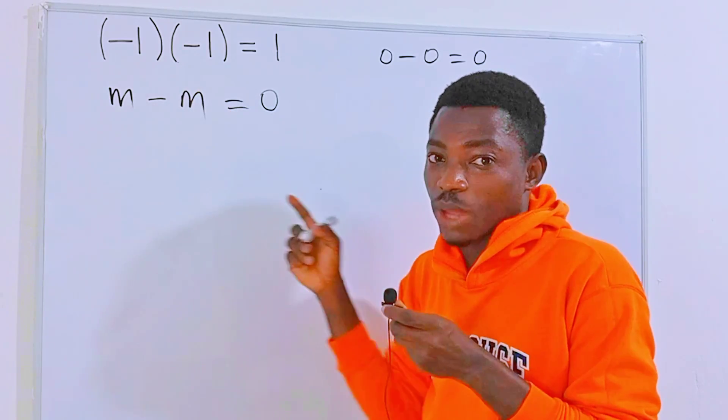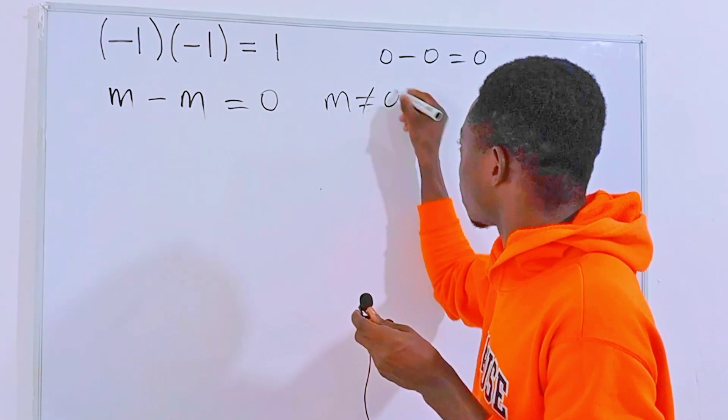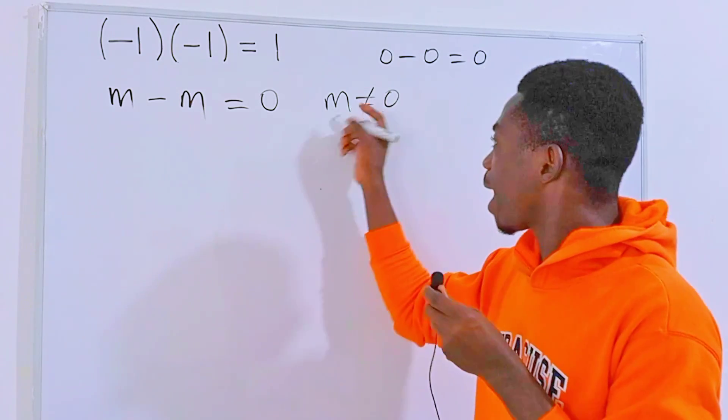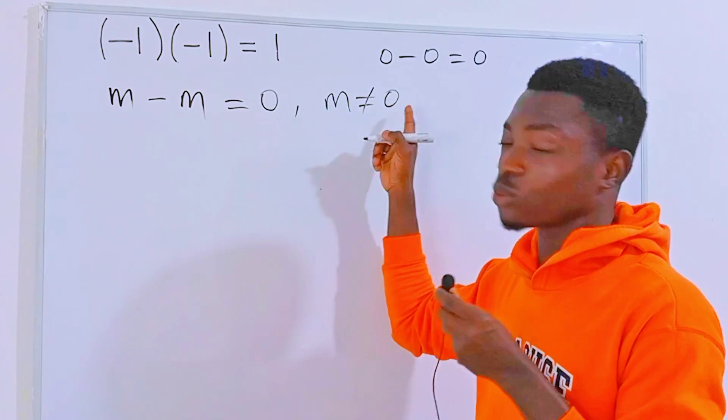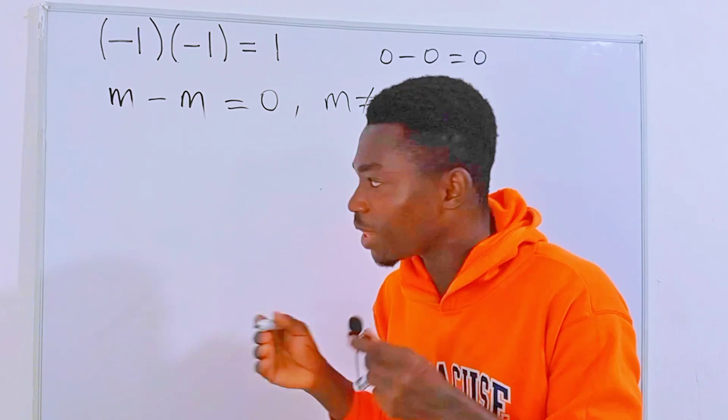But for the sake of this proof, you have to admit that m is not necessarily zero. In other words, m is never equal to zero. In the same way, if you have two numbers which are the same, in this case let's say minus m...